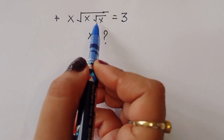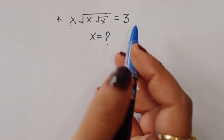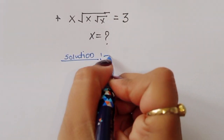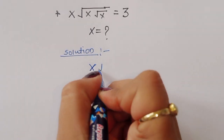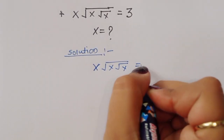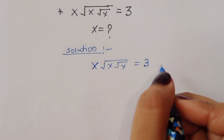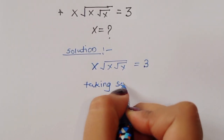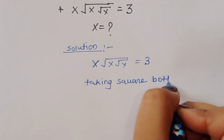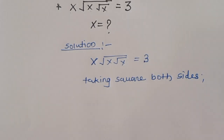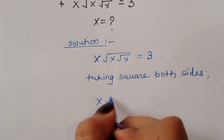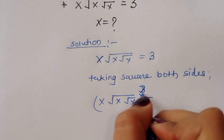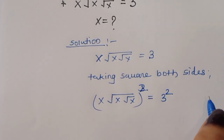The question is: given x times the square root of x times the square root of x equals 3, we have to find the value of x. Let's see the solution. Taking square on both sides: x times square root of x times square root of x, the whole square, is equal to 3 squared.